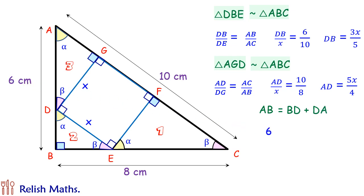AB is given as 6 and BD we have calculated already as 3x upon 5. DA is 5x upon 4. So on simplifying we get value of x as 120 upon 37 and we have got value of x.